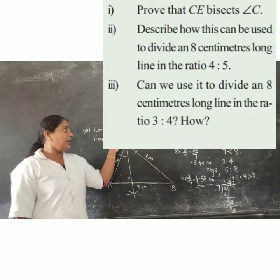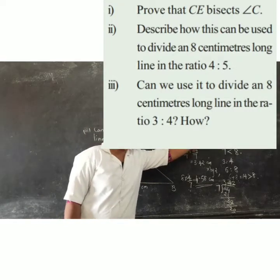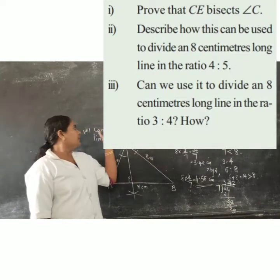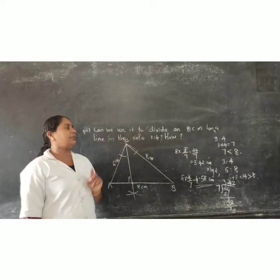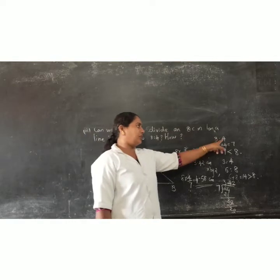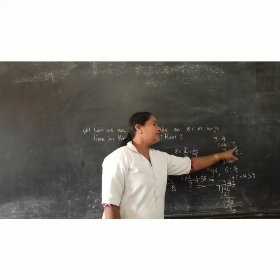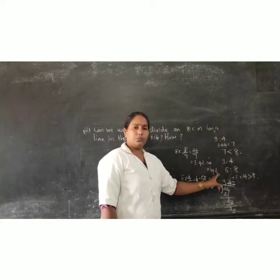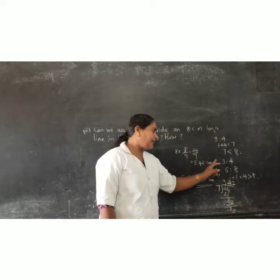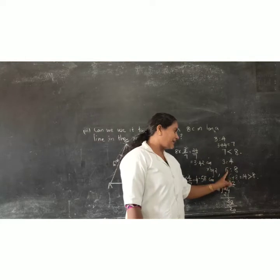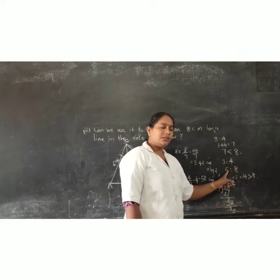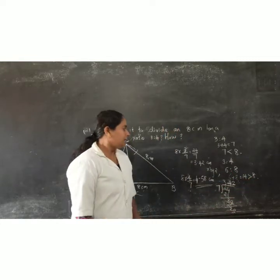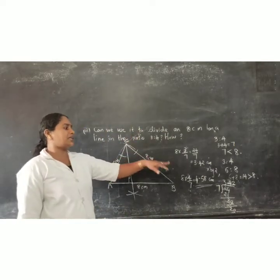Can we use this to divide an 8 cm long line in the ratio 3 to 4? How? Now can we use this to divide 8 centimeter 3 is to 4? Why 3 is to 4? 3 plus 4, adding we get 7. 7 is less than 8. Cannot be drawn. Therefore 3 is to 4 multiplied by 2. Then ratio is 6 is to 8. Then 6 plus 8 is 14, which is greater than 8. Then we can draw a line divided 8 centimeter 6 is to 8.